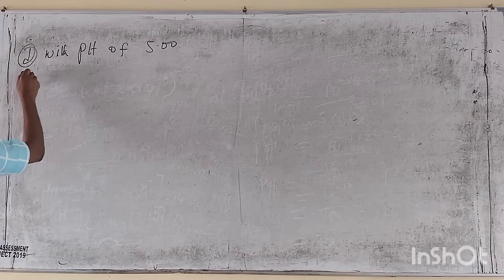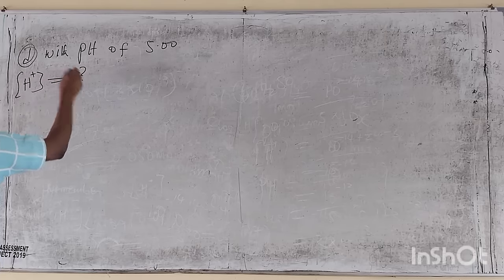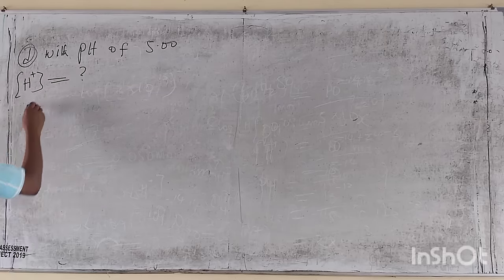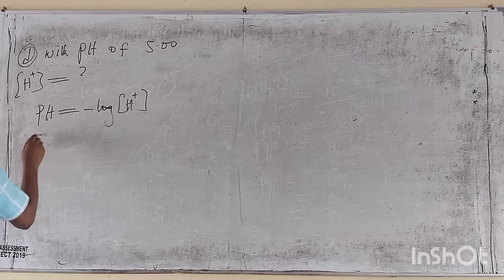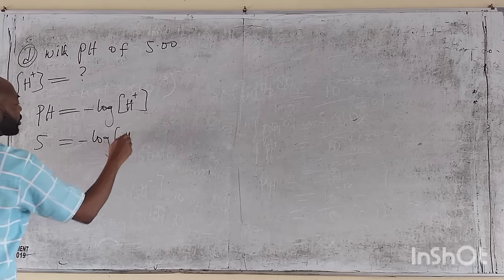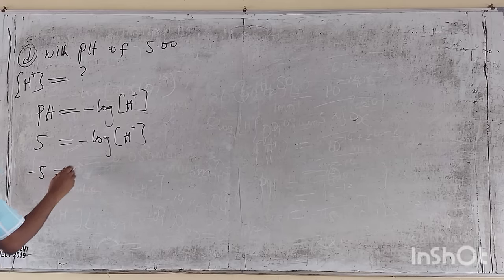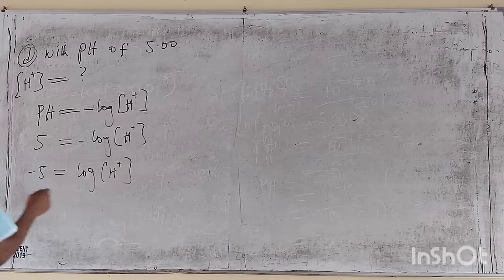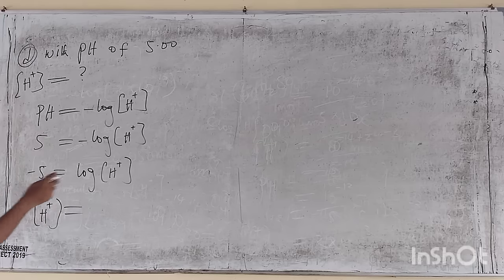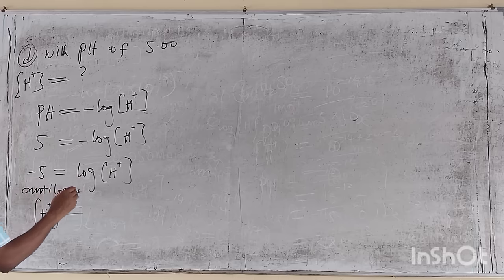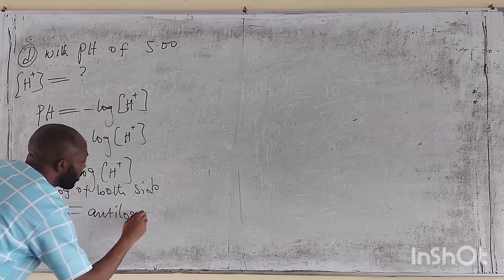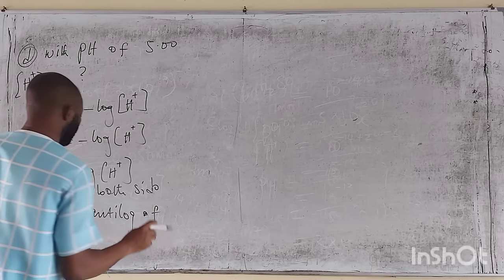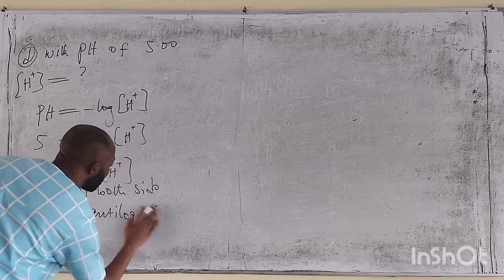With pH of 5.0, the hydrogen ion concentration: we say pH equals the negative log of hydrogen ion concentration. So 5 equals minus log of H⁺, which means minus 5 equals log of H⁺. We look for the anti-log on both sides.